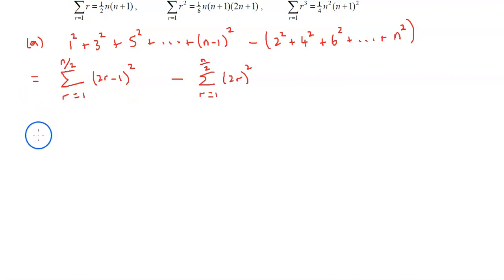From here, everything is nice and easy. We can use distributive rule to expand things out. This is going to be 4r squared minus 4r plus 1 in this sum, and then minus the sum from r equals 1 to n over 2 of 4r squared. And wouldn't luck have it, this thing here is going to cancel with this one.